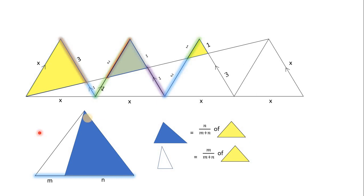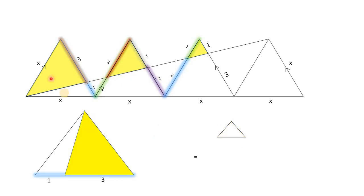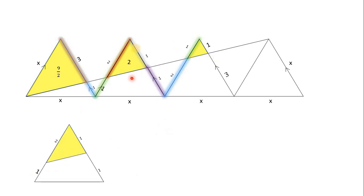Using the area-and-ratio-of-triangle theorem, we find each of the three yellow shaded region triangles. In the first triangle, the ratio is 1:3 and the whole area is 6, so we get 3/(3+1) of 6, which equals 9/2. So the area of the first biggest yellow shaded region is 9/2.